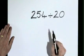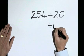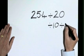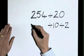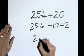25.4 divide by 20. It is best to divide by 10 and then divide by 2. It's the same answer. 25.4 divided by 10 is 2.54.